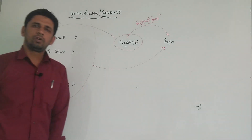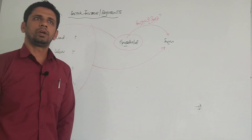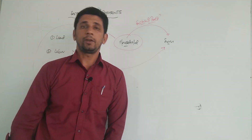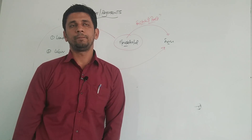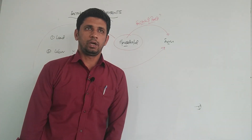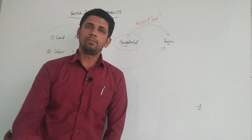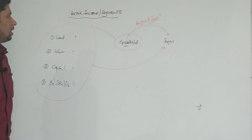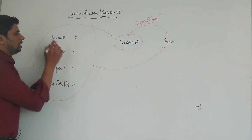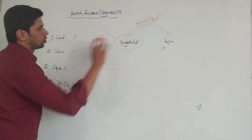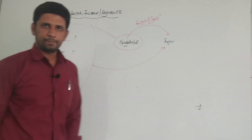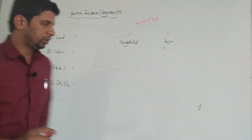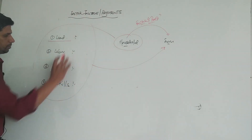They provide land, which is a physical factor. They provide labour, which is a human resource. They provide capital, which is a monetary resource. And they provide entrepreneurship, which involves technical or skills. So land, labour, capital, and entrepreneurship — all these are the factors of production.